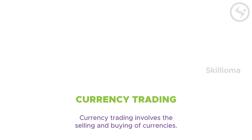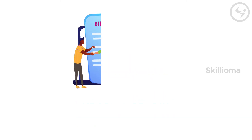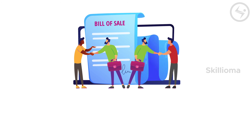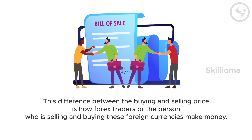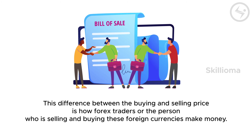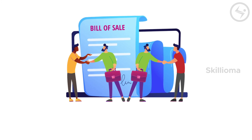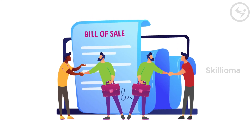Currency trading involves the selling and buying of currencies. The person you sold your currency to can sell it back to someone else who needs rupees at a higher price. This difference between the buying and selling price is how foreign exchange traders make money. This is how the system works.